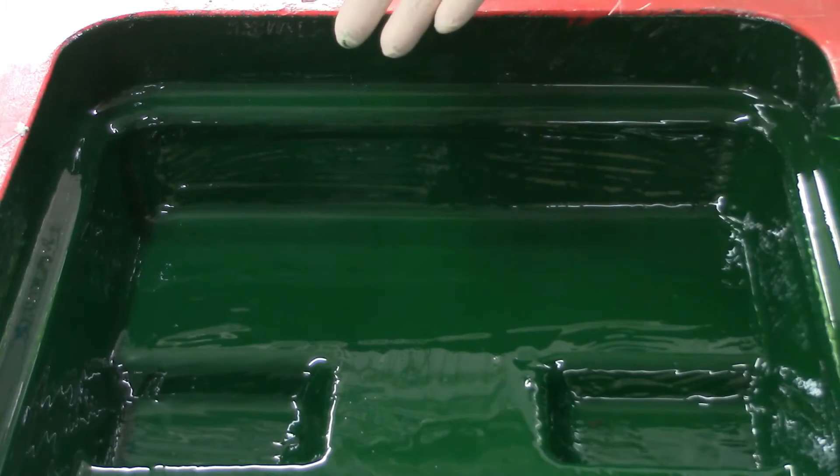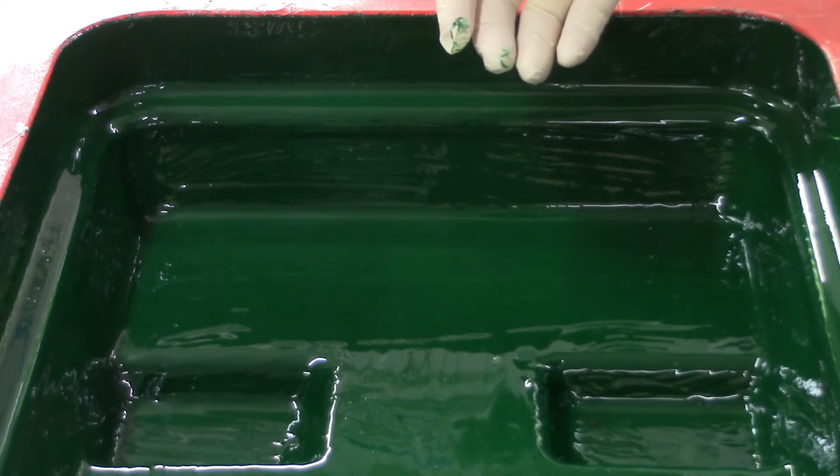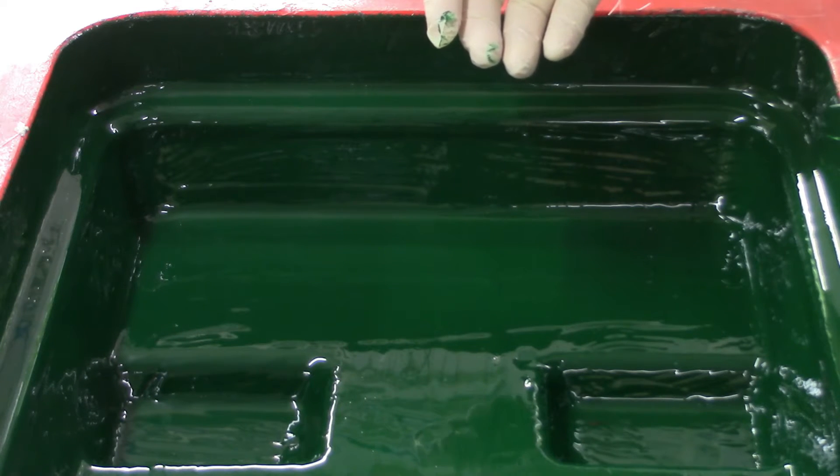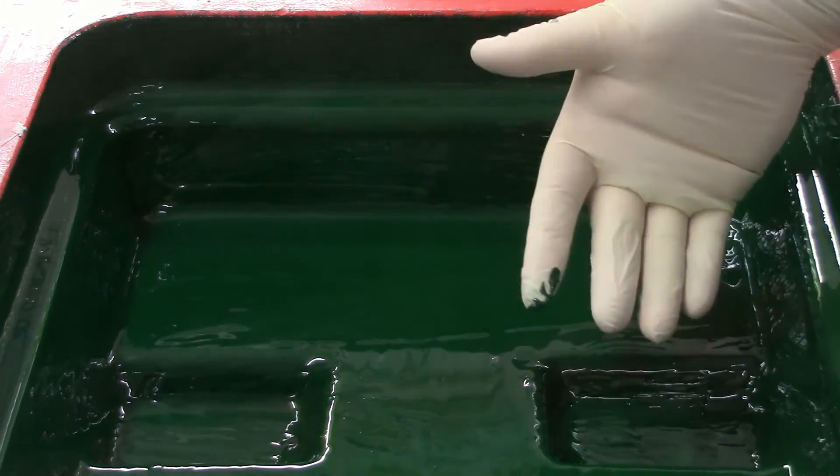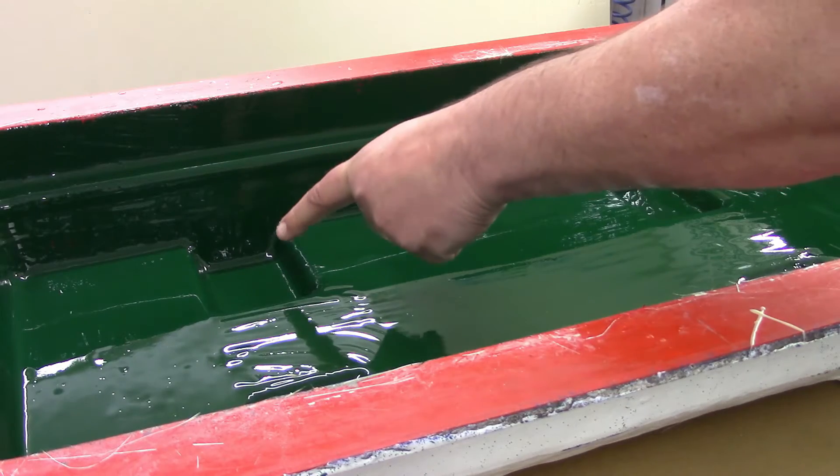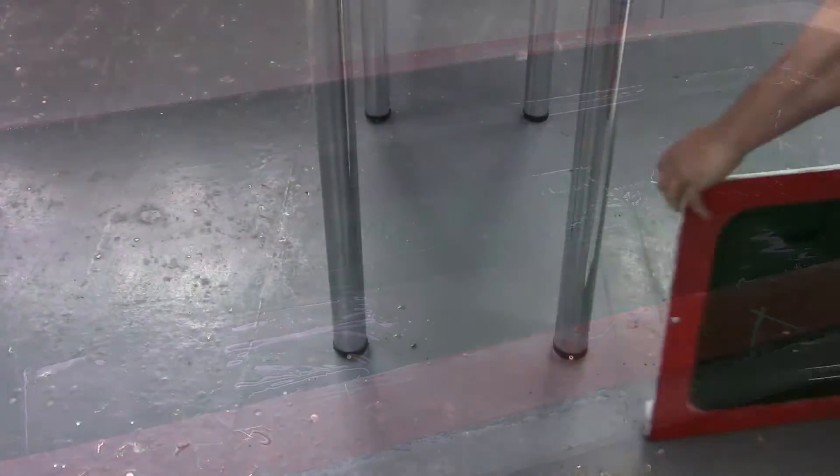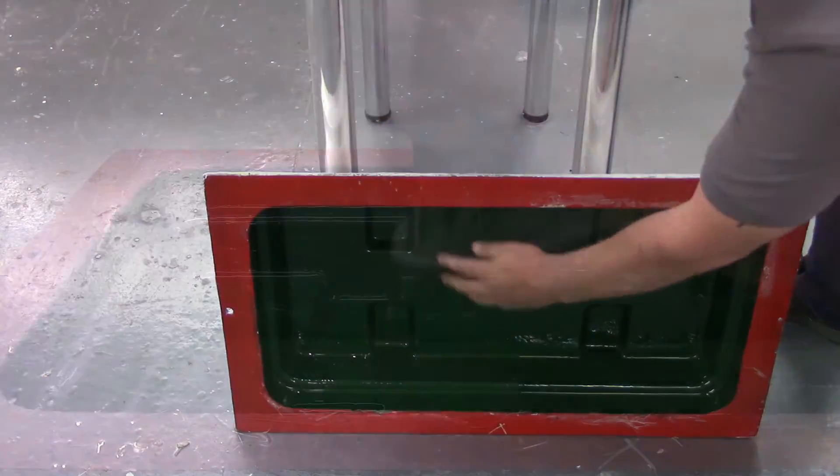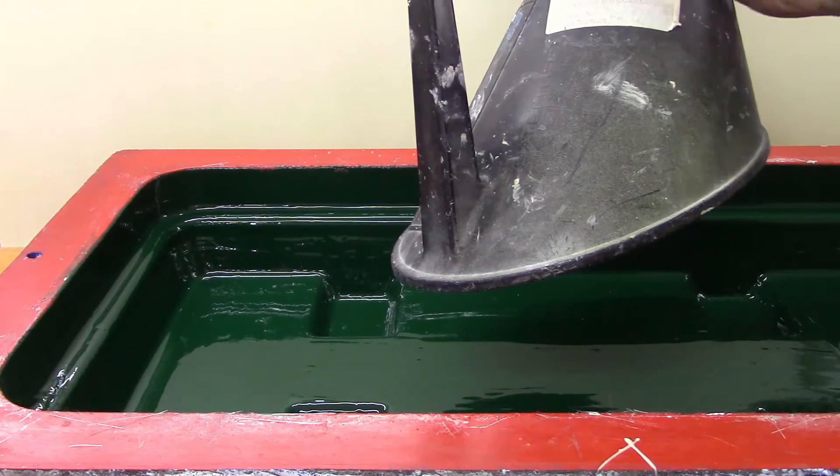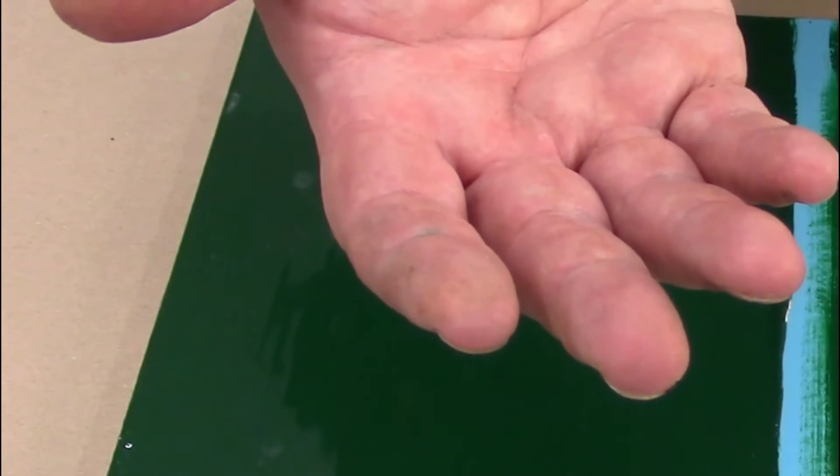Your gelcoat should feel tacky to the touch when cured, but when dragging your fingers over the surface, there should be no colour on your fingertips. Check the deep areas of the mould too. These areas take longer to cure because the styrene vapours collect at the deepest areas of the mould and can slow the gelcoat's curing process. To combat this, simply turn the mould on its side to help the vapours flow out, use a localised extraction system, or simply fan the vapours out of the mould. The gelcoat is ready once no colour is present on your fingertips.